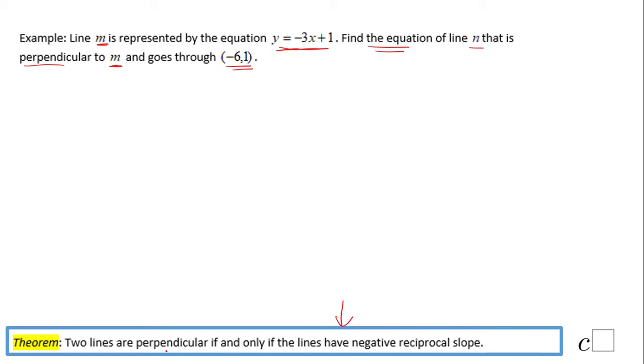How are we going to do that? We're going to use this theorem which says two lines are perpendicular if and only if they have negative reciprocal slope. So we're going to need to work with the slope of a line.